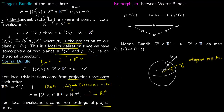Now we want to talk about isomorphisms between vector bundles. Suppose there are two vector bundles E1 and E2 both projecting onto the same base B: so (E1, P1, B) and (E2, P2, B). An isomorphism means there is a homeomorphism H between E1 and E2 such that for each b in B, the map from P1^{-1}(b) to P2^{-1}(b) is a linear isomorphism.